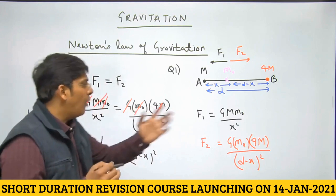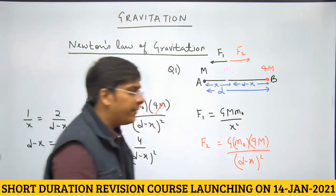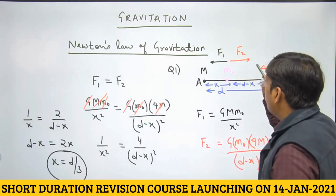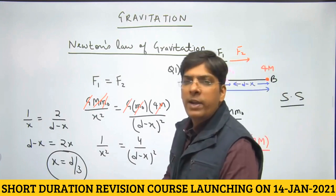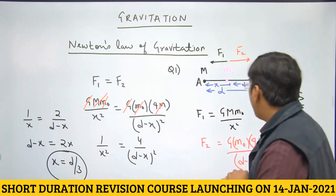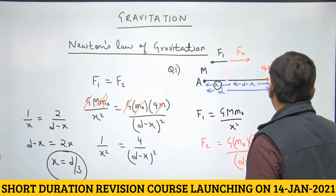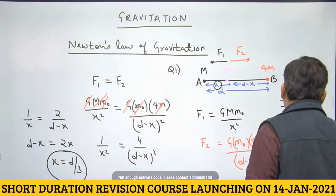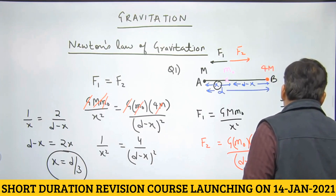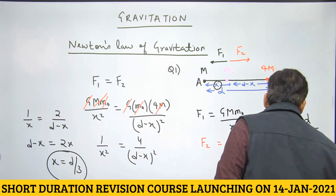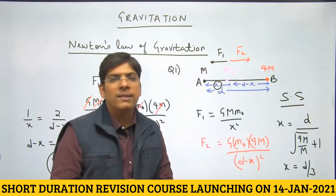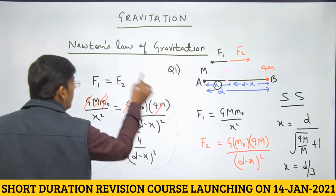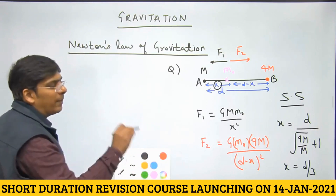Instead of equating forces, you can apply a super shortcut. The point where M0 experiences no net force is called the neutral point. The distance of the neutral point from the smaller mass is given by D divided by (√(bigger mass / smaller mass) + 1). This confirms x = D/3.